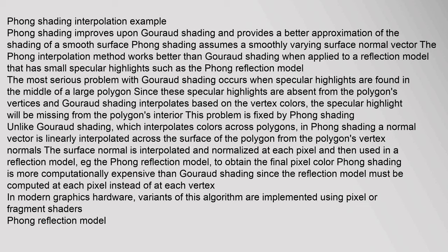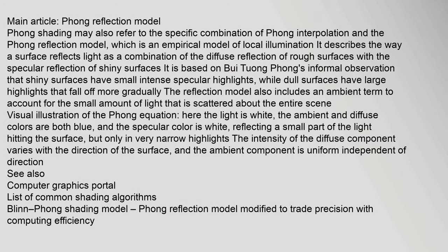In modern graphics hardware, variants of this algorithm are implemented using pixel or fragment shaders. Phong shading may also refer to the specific combination of Phong interpolation and the Phong reflection model, which is an empirical model of local illumination. It describes the way a surface reflects light as a combination of the diffuse reflection of rough surfaces with the specular reflection of shiny surfaces. It is based on Bui Tuong Phong's informal observation that shiny surfaces have small intense specular highlights.